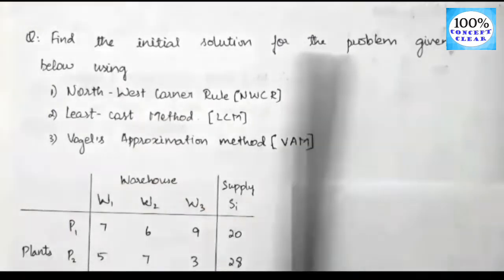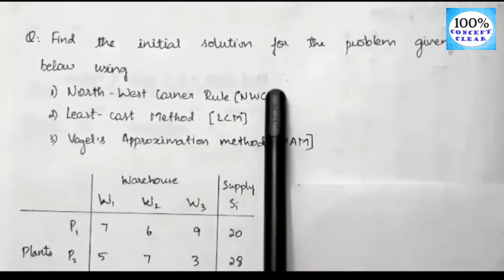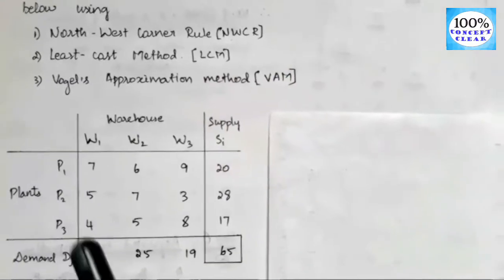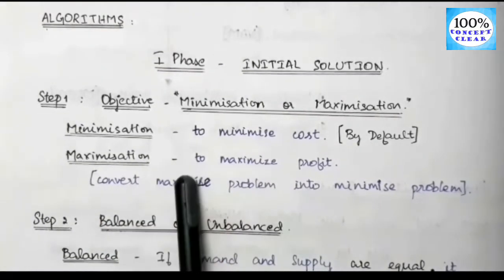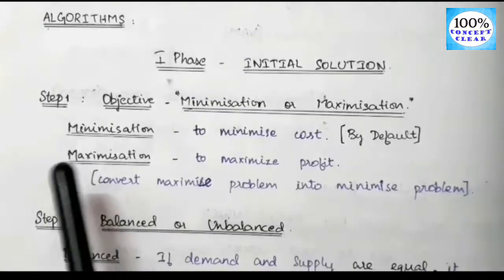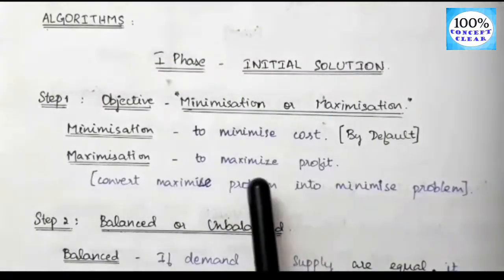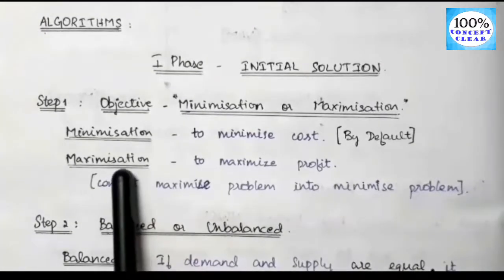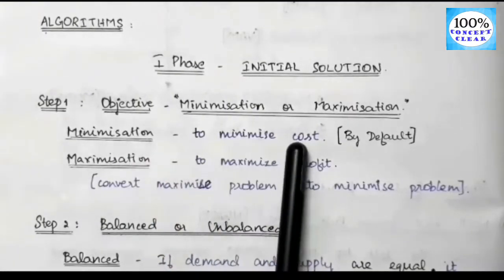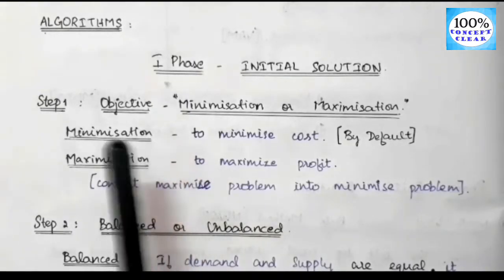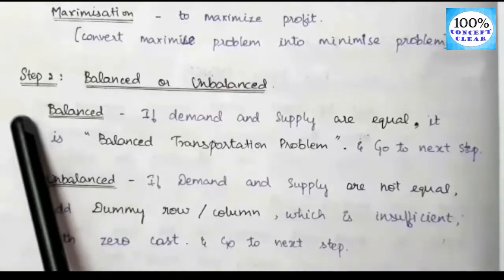If you look at the question, it says find the initial solution — the cost element in the matrix is the minimum cost. If it were a maximum profit problem, we would find the maximum profit. Maximization-type transportation problems will be covered in a future video. In this video, we will see the minimization problem. By default, we go with the minimum cost. Now, next step is Step 2.